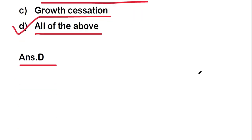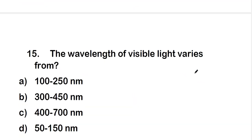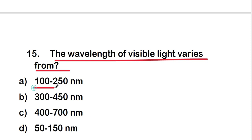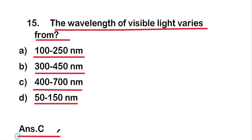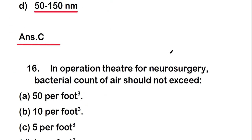Next question: the wavelength of visible light varies from — 100 to 250 nanometer, 300 to 450 nanometer, 400 to 700 nanometer, or 50 to 150 nanometer? The right answer is option C, that is 400 to 700 nanometer. The wavelength of visible light varies from 400 to 700 nanometer.